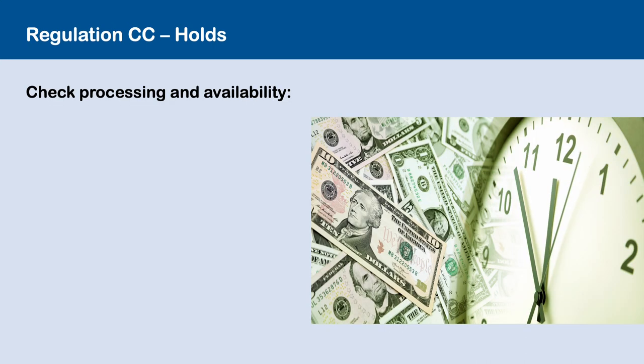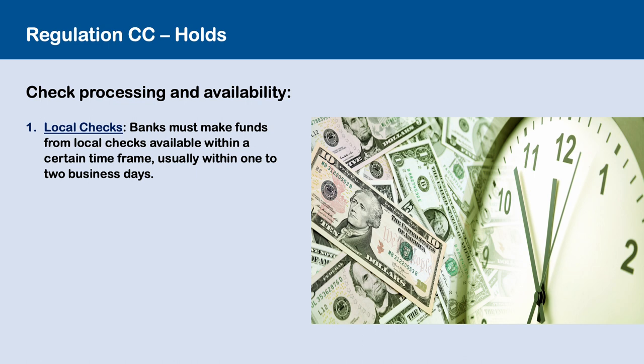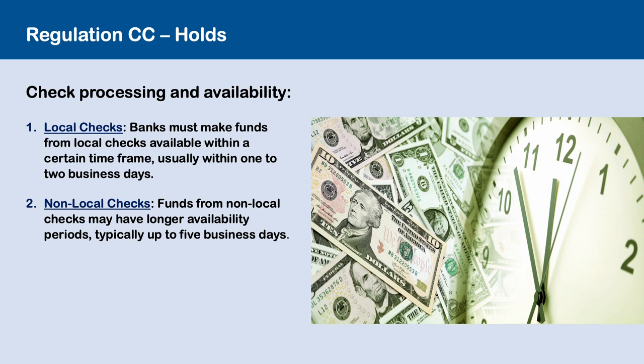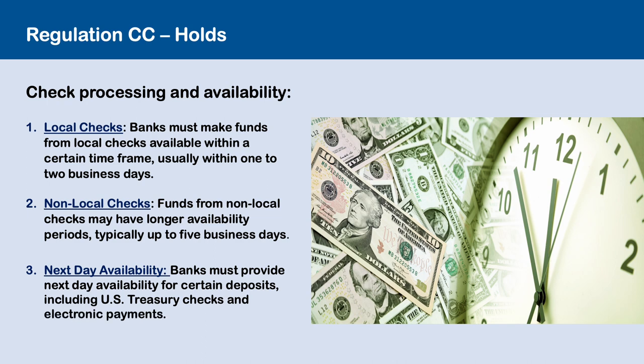Check Processing and Availability: 1. Local checks — Banks must make funds from local checks available within a certain time frame, usually within one to two business days. 2. Non-local checks — Funds from non-local checks may have longer availability periods, typically up to five business days. 3. Next-day availability — Banks must provide next-day availability for certain deposits including U.S. Treasury checks and electronic payments.